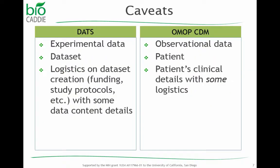I'd like to point out the inherent differences between OMAP CDM and that schema. That schema is meant to represent the dataset produced through a study. However, OMAP CDM is meant to represent the clinical details about the patient. The dataset schema focuses on expressing the logistics around the dataset — for example, how the dataset is created, what the access conditions are, and so on — with some important details about the data content.